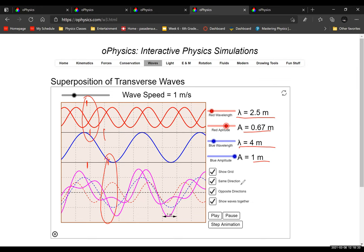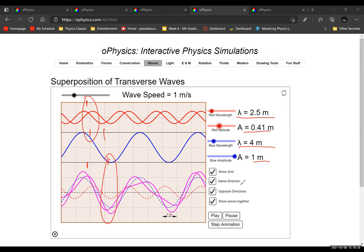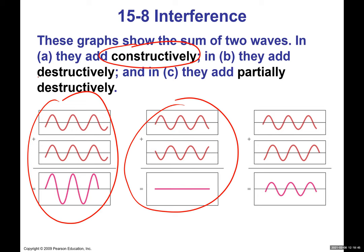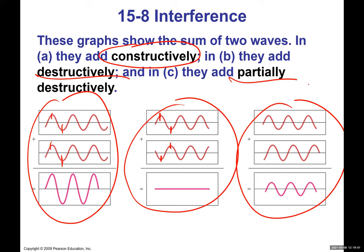To summarize: constructive interference occurs when two waves overlap such that crest meets crest or trough meets trough. Destructive interference occurs when a crest meets a trough or vice versa. In between, you get partial interference — the superimposed wave has lower amplitude than the individual waves, but is not completely destroyed.